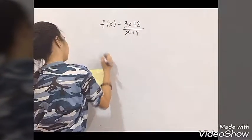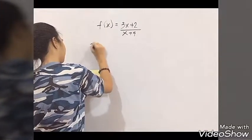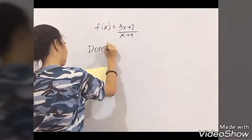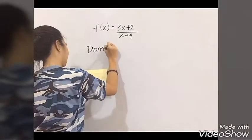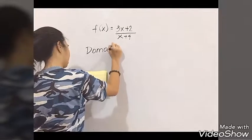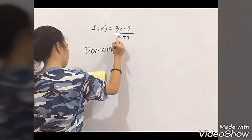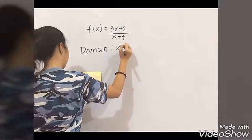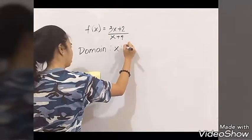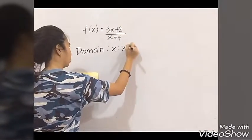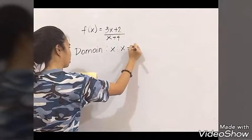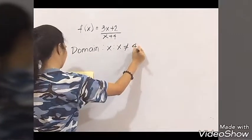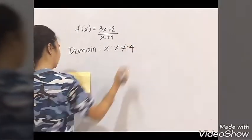First, we need to find its domain. The goal here is not to have a denominator of 0. So the domain will be all real numbers except those that make the denominator 0. The denominator is x plus 4, and clearly, when you add negative 4 and 4, that will give you a result of 0. So the domain is all real numbers except negative 4.